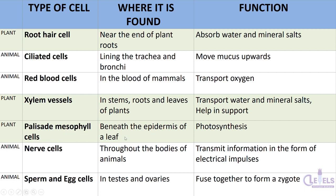The palisade mesophyll cell is beneath the epidermis of the leaf and is responsible for photosynthesis. It is quite cylindrical in shape and the cells are packed closely together. Nerve cells are present throughout the bodies of animals — not just in the brain but also in the spinal cord and throughout the body. Their function is to transmit information in the form of electrical impulses.